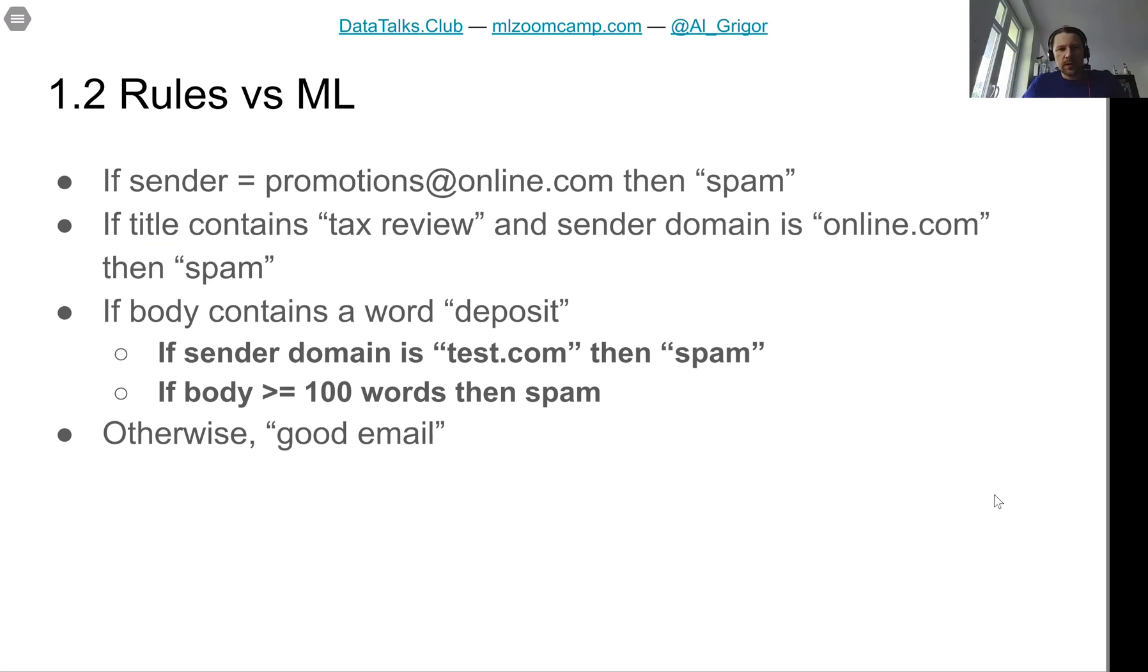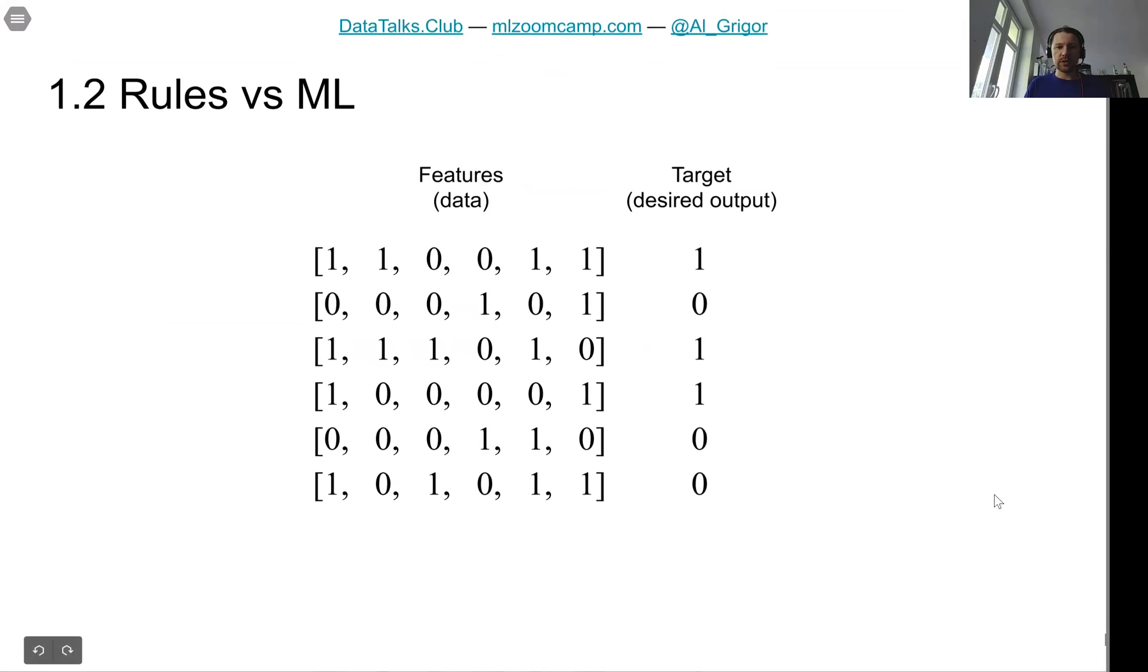In the second lesson we compared rule-based systems with machine learning. In a rule-based system humans come up with rules and then convert these rules into a programming language like Python, and we talked about an example of spam prediction. In a rule-based system we would manually analyze the data, try to extract patterns from this data and code them as rules, and it becomes quite messy over time. With machine learning we don't have this problem because we don't need to encode this manually and models extract patterns themselves.